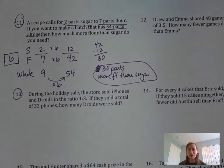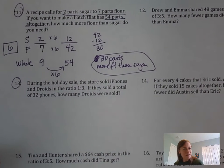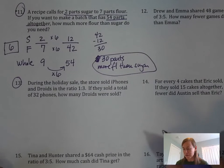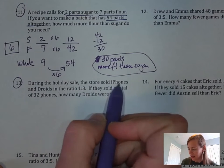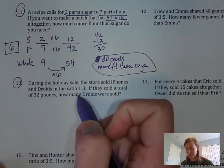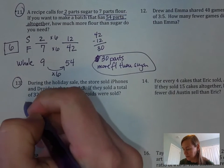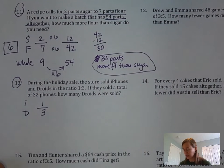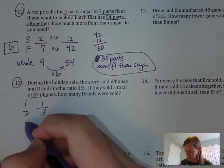That's number 11. As you approach number 12, it's going to be a very similar approach, so I'm going to skip it. Now we're going to go to number 13. It says during the holiday sale, the store sold iPhones and Droids in the ratio of 1 to 3. Let's go ahead and make some notes on that. 1 to 3, and that was iPhones to Droids.